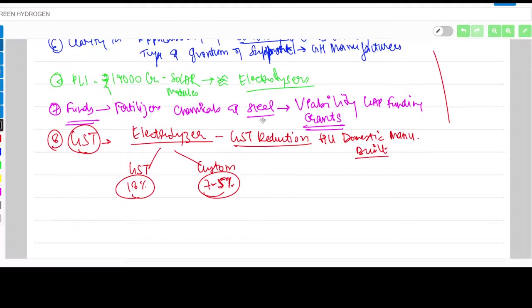Seventh point is funds. Fertilizers, chemicals, and steel are the three main industries where green hydrogen production happens. To move towards green hydrogen production they need electrolyzers and new machinery. He suggests the government could introduce grants like viability gap funding to help them transition from current machinery to green hydrogen production machinery.